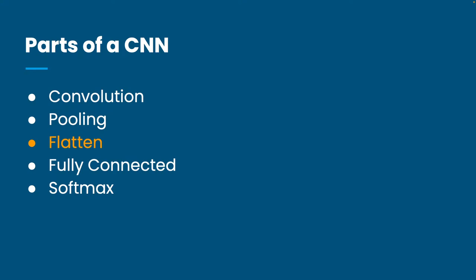Then there's the flattening layer, which is straightforward: take the matrix, slice it into rows, and concatenate along rows. This is applied after all convolutional and pooling layers, right before passing the data into a fully connected layer. The CNN is split into two parts: the convolutional part (convolutional and pooling layers that learn spatial representation), and the fully connected part that classifies the learned features.